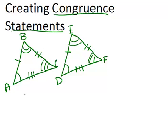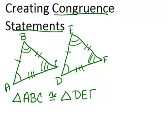So we can write a congruent statement and it will look like this. Triangle ABC is congruent to triangle DEF. And remember this is the symbol for congruent.